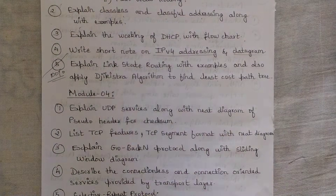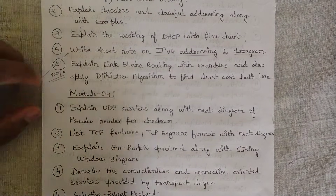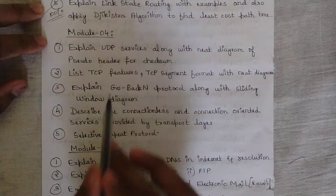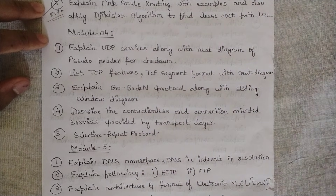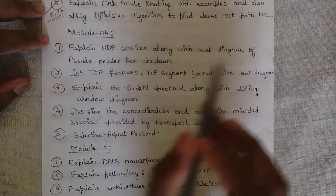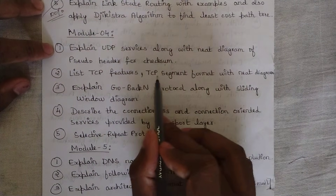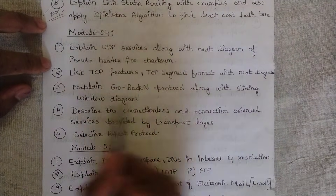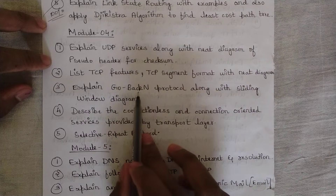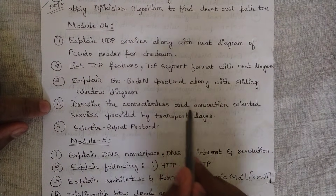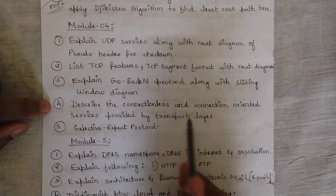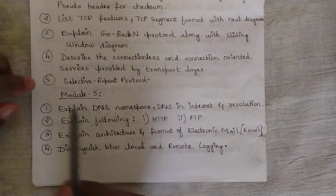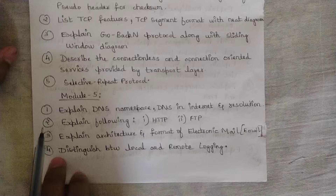Please study the link state routing and Dijkstra's algorithm question — it will definitely be asked. Now for Module 4: first question is 'Explain UDP services along with a neat diagram of the pseudo header for checksum' — I'll update this in my playlist by tomorrow. Second is 'List TCP features and explain the TCP segment format with neat diagram.' Third is 'Explain the Go-Back-N protocol along with the sliding window diagram.' Fourth is 'Describe connectionless and connection-oriented services provided by the transport layer,' and also the selective repeat protocol.